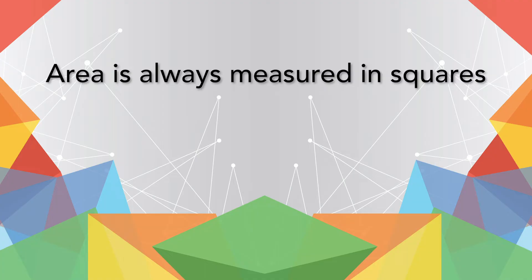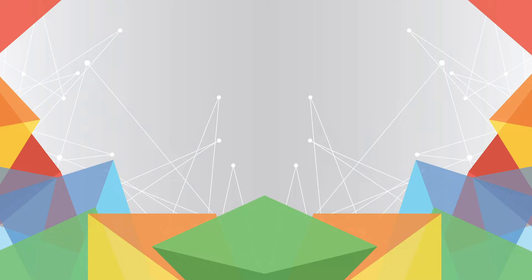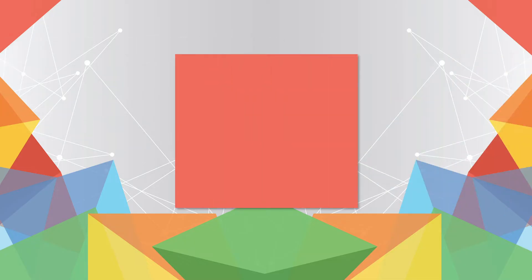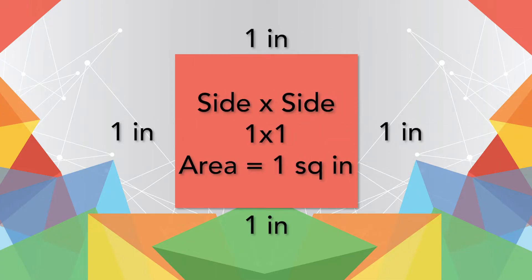One thing to remember is that area is always measured in squares. So for example, the area of a space can be ten square millimeters, ten square inches, ten square feet, ten square miles, and so on. See this figure — it is a square, meaning all the sides are the same length. The length of each side is one inch, meaning its total area measures one square inch: side times side, or one times one.